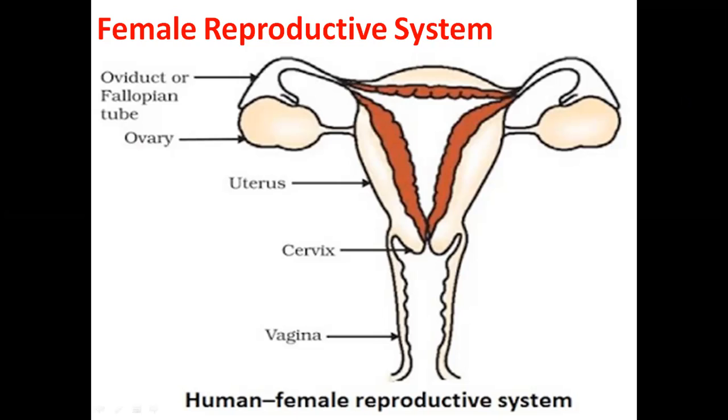So this is all about the female reproductive system. I hope you have already understood the basics. We can talk in more detail later on. I hope you understand — share with your friends so they can also understand. Biology lovers can add their comments, and if they have any questions or confusion regarding this, they can ask me in the comment section. Thank you so much.